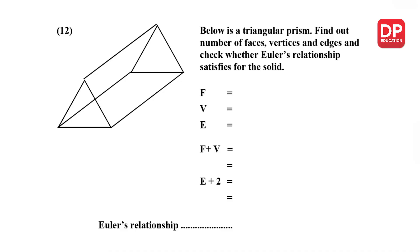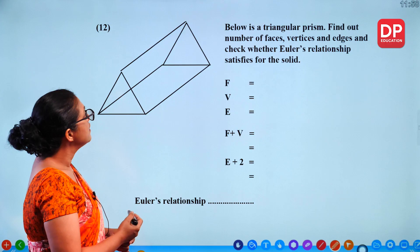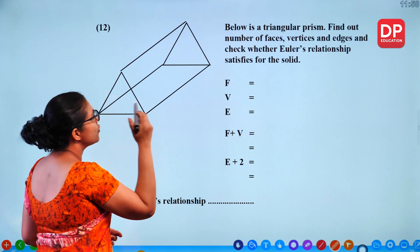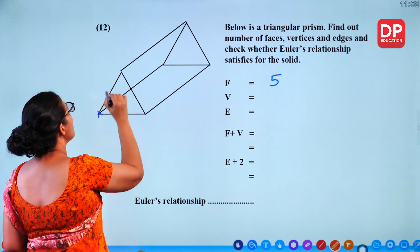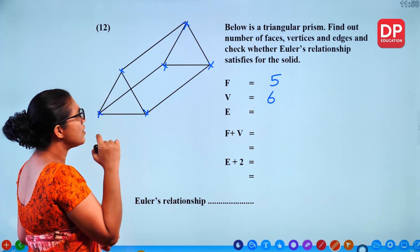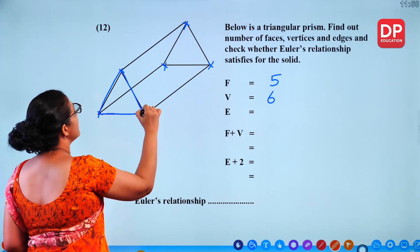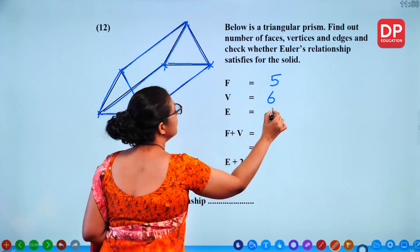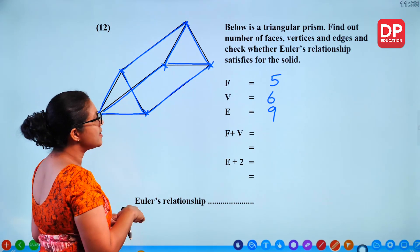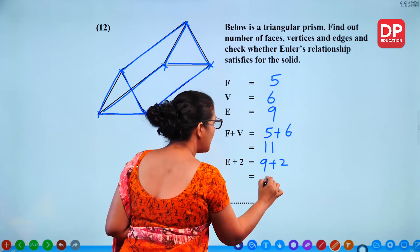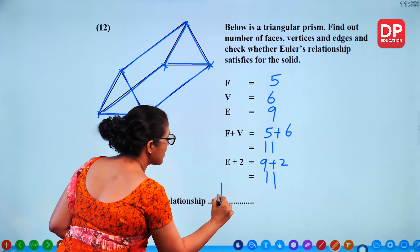Below is a triangular prism. Find the number of faces, vertices and edges and check Euler's relationship. Faces: 2 triangles and 3 rectangles gives 5 faces. Vertices: 6. Edges: 9. Checking: 5 plus 6 equals 11, and 9 plus 2 equals 11 — Euler's relationship is true.